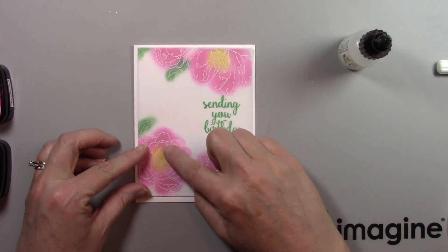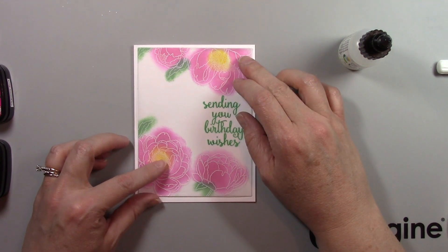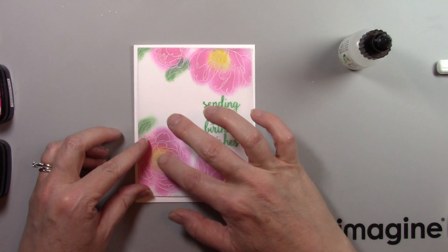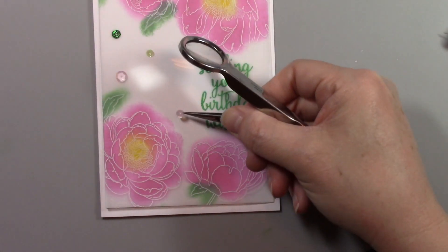Vellum is tricky to adhere because you can often see your glue behind but when you use On Point glue and because I'm adding it to the center of those flowers and smushing the vellum down you can't tell that I've adhered it using glue.